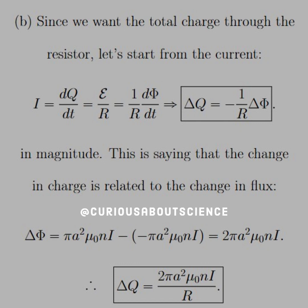For Part B, they want to know the total charge. We can relate charge and flux via the current: we know current is dQ/dt, and also by Ohm's Law it's equal to EMF over R. So plugging in definitions, we get that dQ/dt equals negative d(Phi)/dt divided by R. Integrating both sides with respect to t cancels out the factors — separation of variables. Good to go there.